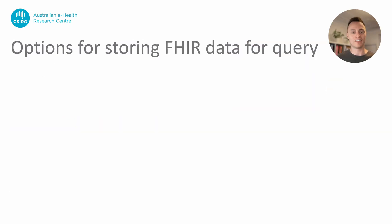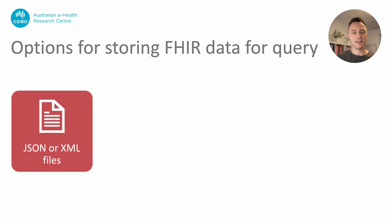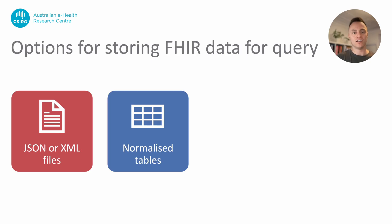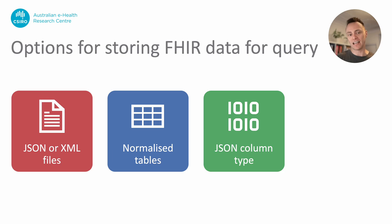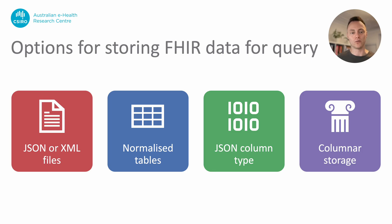Some of these problems stem from the fact that there are just so many options for storing FHIR data. You can simply leave it as JSON or XML files and use tools that can query these files directly. You can attempt to create a normalized schema in a relational database. You can take FHIR data and save it into a JSON-typed column within a database, then use JSON-specific query syntax to get it back out. Or you can use a columnar storage format such as Parquet or Orc. There are also other options such as triple stores, XML databases and proprietary services such as Google BigQuery. Experience tells us that people will use the tools that they already have, that they have experience with, and that are already integrated with the rest of their tech stack.